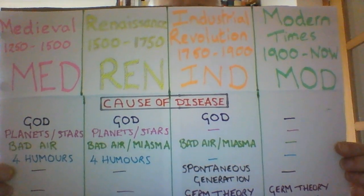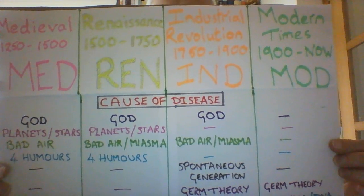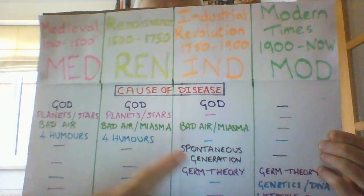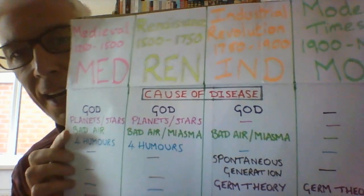Now, as you should know, some of the causes of disease were followed for many many centuries, and then we get change. What I've done here is put the main ideas on a piece of paper — please feel free to freeze the screen and use this, or develop your own and have it as a revision resource. There it is — all the different causes in Medieval times, the Renaissance, Industrial Revolution, and Modern.